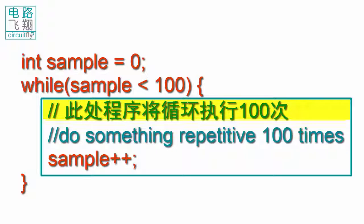Apparently, after 100 repetitions, the sample equals to 100. The expression sample less than 100 becomes false. The while loop stops.